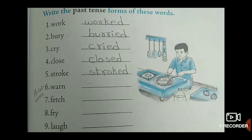Coming back to page 45. Write the past tense form of these words. 'Work' → worked: last letter is consonant K, so we add ED. 'Bury' → buried: last letter is Y, so in place of Y we add IED. 'Cry' → cried: same condition, last letter Y, replace Y with IED. 'Close' → closed: last letter is E, so we add D only. 'Stroke' → stroked: same condition, last letter E, add D only.